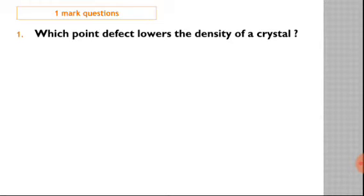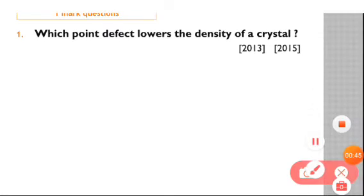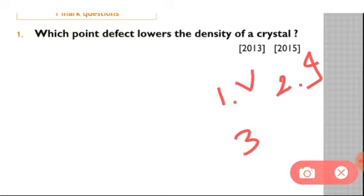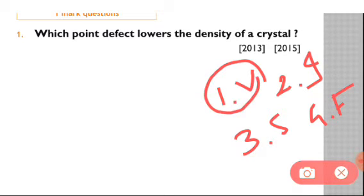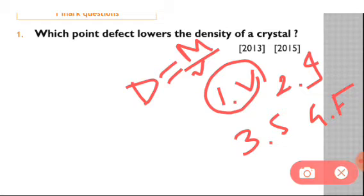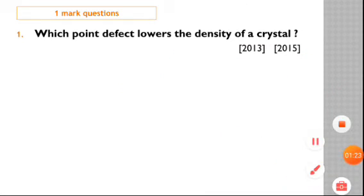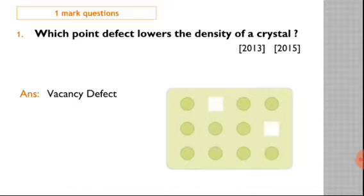Our first question is which point defect lowers the density of a crystal? This question appeared in 2013 and 2015. The point defects are vacancy defect, interstitial defect, Schottky defect, and Frenkel defect. The defect that lowers density is the vacancy defect because the mass decreases. We know density equals mass by volume, and when vacancy defect is created, atoms are missing so mass decreases while volume stays the same, so density decreases.